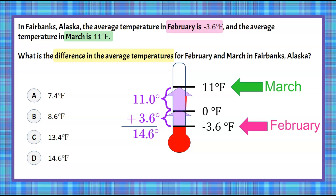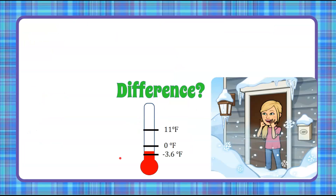So the difference between these two temperatures is 14.6 degrees. It increased 14.6 degrees on average from February to March, and that is answer choice D. That is how you find the difference using a vertical number line or a thermometer.